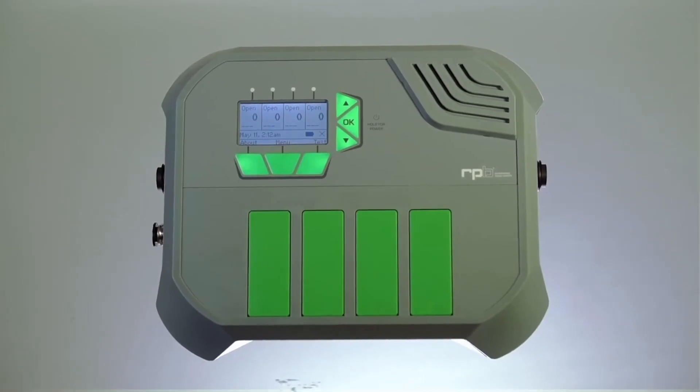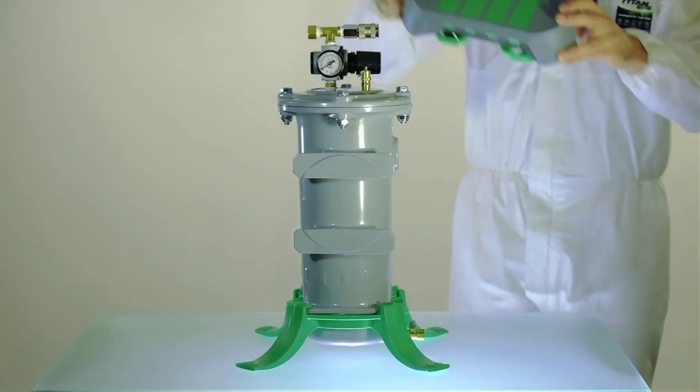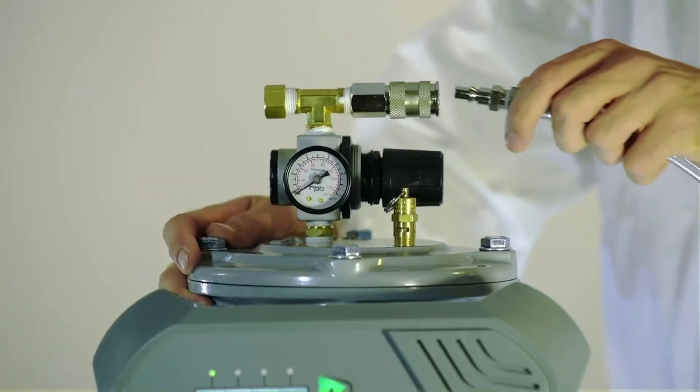The GX4 can be surface-mounted, wall-mounted using the GX4 wall bracket, or mounted directly to an RPB Radex Airline filter, with which it pairs perfectly.